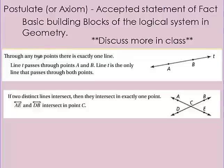The first postulate: through any two points there's exactly one line. You might know this one. Line T passes through points A and B — line T is the only line that passes through those points. Any two points anywhere, there's only one line that goes straight through them all. You can't curve a line, so there's only one way to go straight through two points.